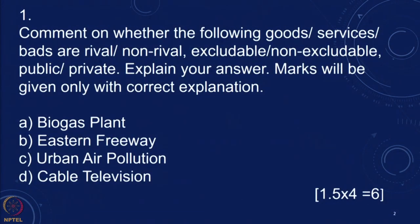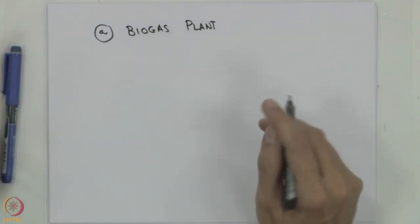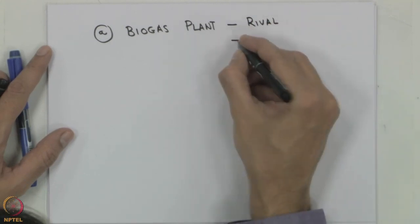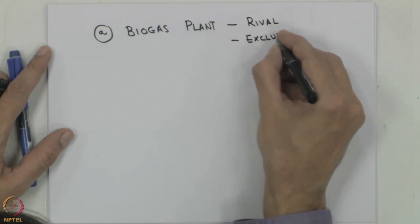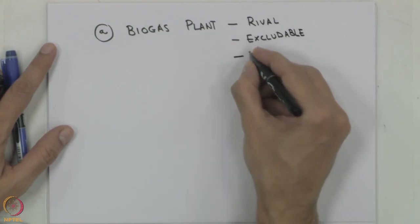The first question asks us to comment on whether the following goods, services, and bads are rival, non-rival, excludable, non-excludable, public, or private. Starting with the biogas plant: it is manufactured by a company, sold at a price, and if someone uses the plant it will not be available to someone else. So this is clearly rival as well as excludable — it is sold only once a price has been paid — and so this is very clearly a private good.